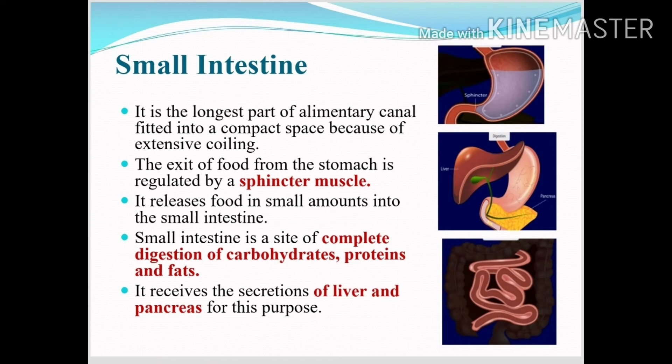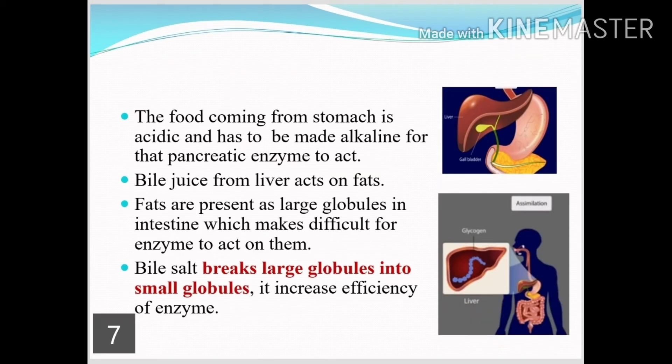The small intestine is the site of complete digestion of carbohydrates, proteins, and fats. It receives secretions from the associated glands — the liver and pancreas. The food coming from the stomach is acidic and needs to be made alkaline; this is done by the pancreatic enzymes. Apart from that, bile juice from the liver acts on the fats. Fats are present as large globules in the intestine, and enzymes find it difficult to act on large globules. Bile salts break the large globules into smaller globules, increasing the efficiency of the enzymes.